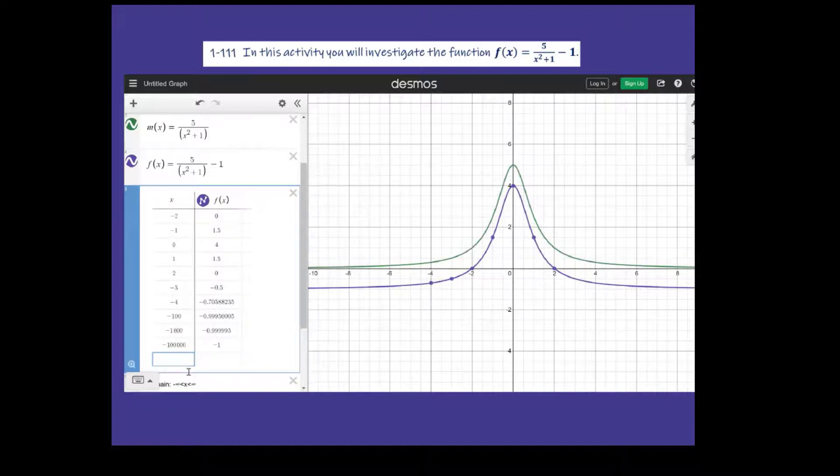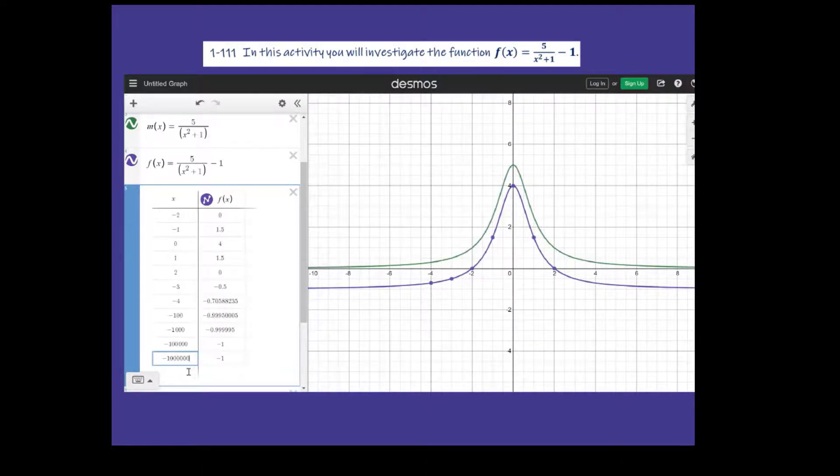And you'll see the same thing if I put in negative million. So I've got to make sure I count the number of zeros. Look at that. It's negative 1. But it's really not negative 1. It's just getting infinitesimally closer to negative 1, but it's never, ever really going to hit it. Just Desmos can't round that way.